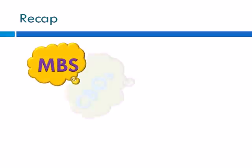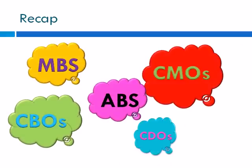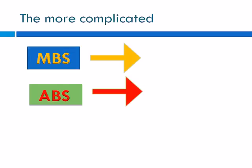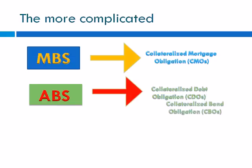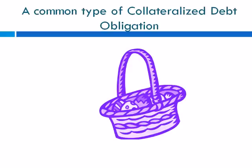Recall how we were learning about these very different financial products. We're going to go into a little detail about some of the ones not covered before. A more complicated type of MBS was a collateralized mortgage obligation, while a more complicated type of ABS was a collateralized debt obligation. CDOs were generally a collection of all debt products that weren't mortgages, including CBOs — a collection of bonds — and CLOs, a collection of loans.